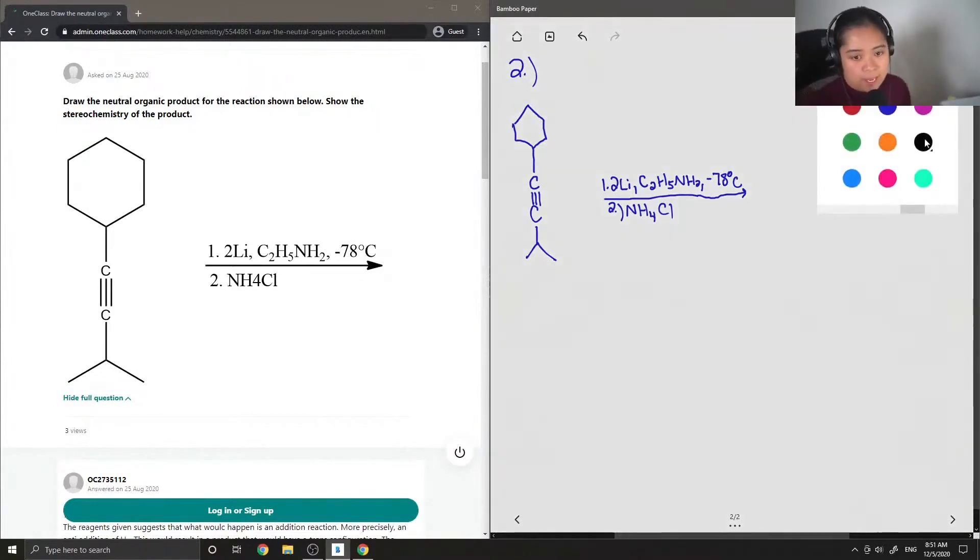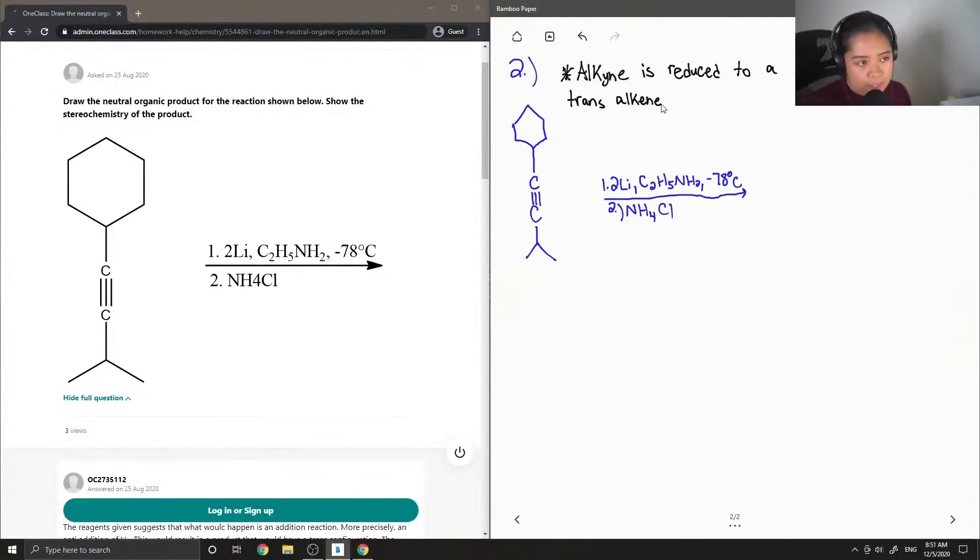Okay, so what happens during this reaction is that our alkyne is reduced to a trans-alkene. So when we have a trans-alkene, this is when our substituents are on opposite sides of a double bond.